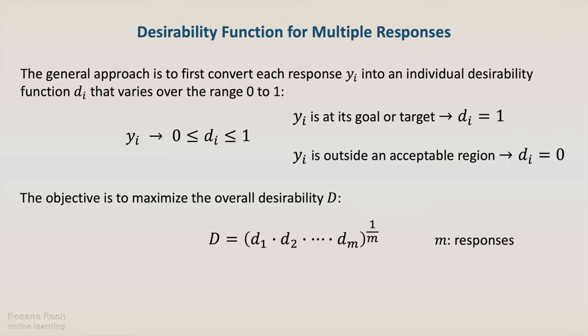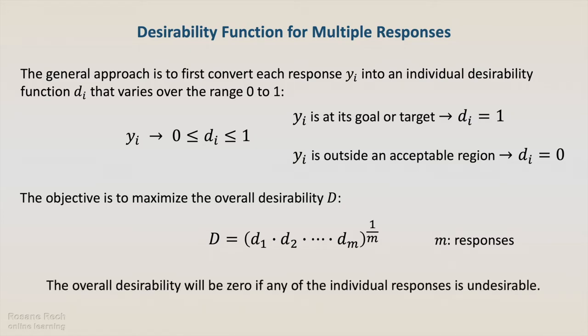As the overall desirability is represented as the product of the individual desirability functions, it will be zero if any of the individual responses are undesirable, meaning outside the acceptable region. Let's take a closer look at each form of desirability functions.